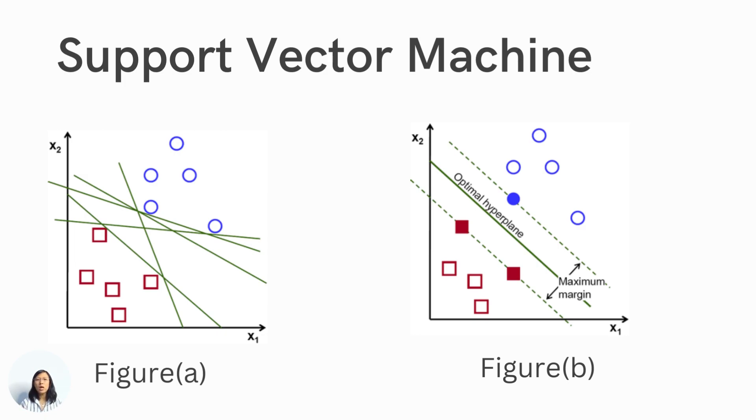So if you look at Figure B, our optimal hyperplane is shown in green color, and then the distance from the blue and red color has been maximized. So in other words, SVM tries to find a hyperplane that maximizes the distance from the nearest point from both classes. This is how the SVM works.